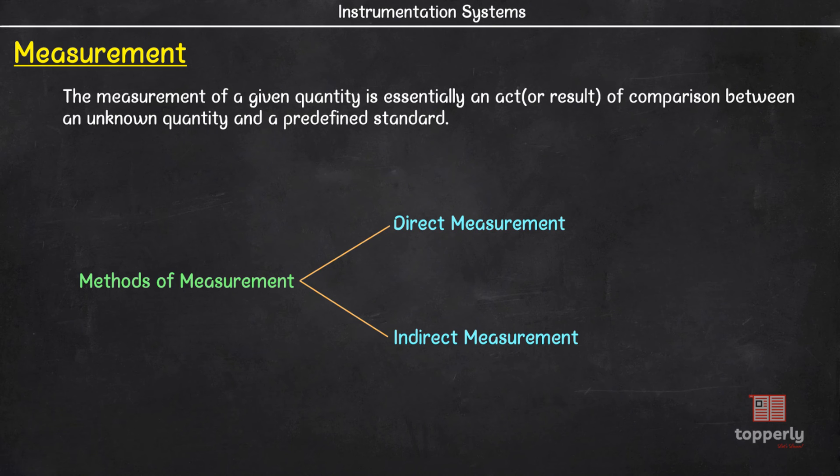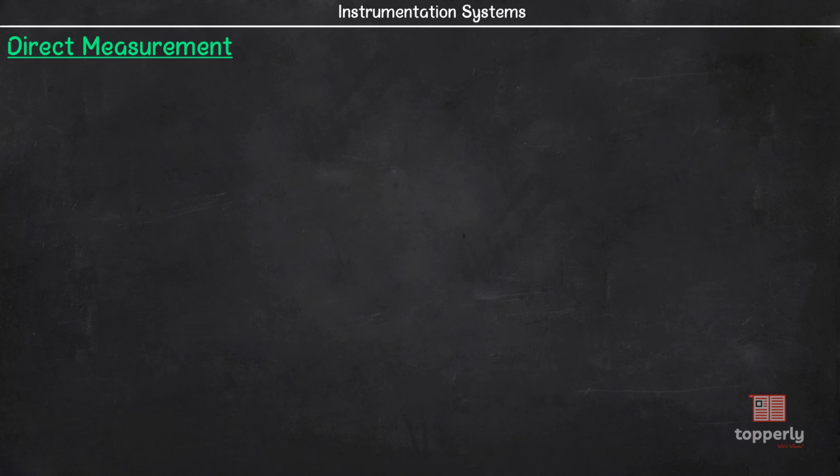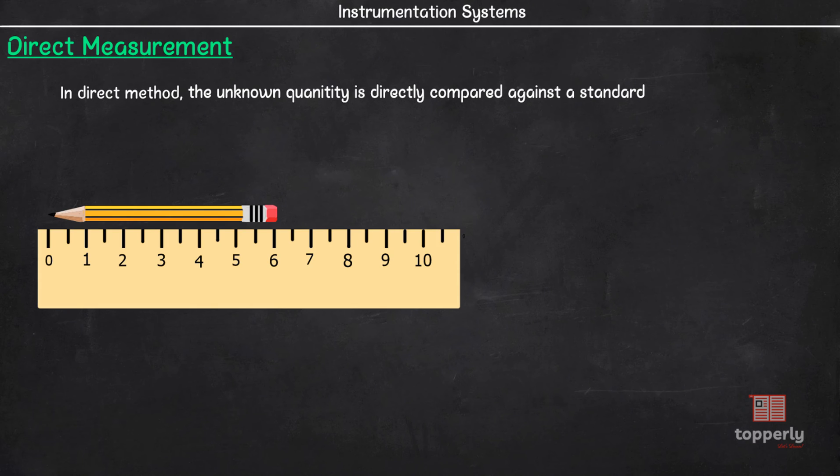First, let us see what is direct measurement and then discuss the classes under it. In direct method, the value of the unknown quantity is obtained directly by using measuring instruments. The best example of this is measuring the length of an object by using a graduated scale. Another example is a simple thermometer that measures the temperature. It is the simplest method of measurement as it involves no calculations to arrive at the result. We can simply read out the results from the scale.